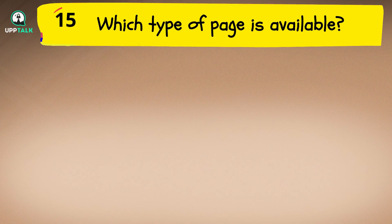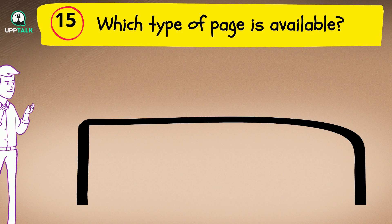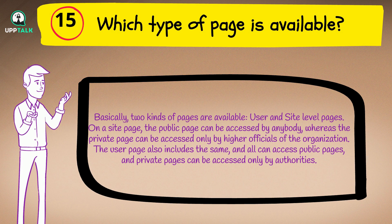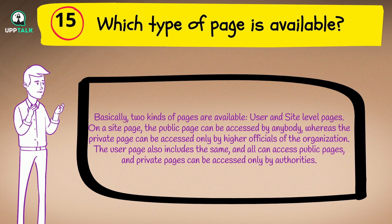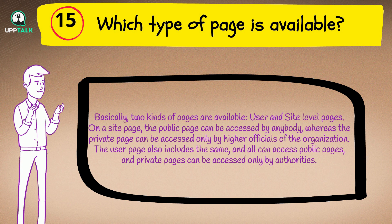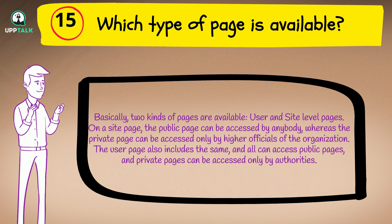Question 15: Which type of page is available? Answer: Basically, two kinds of pages are available — user and site level pages. On a site page, the public page can be accessed by anybody, whereas the private page can be accessed only by higher officials of the organization. The user page also includes the same: all can access public pages and private pages can be accessed only by authorities.